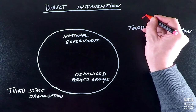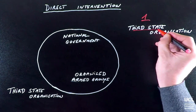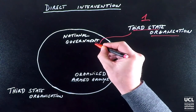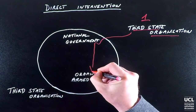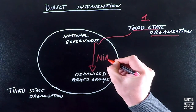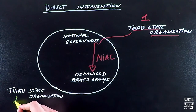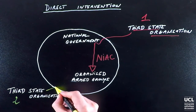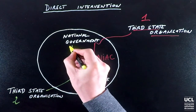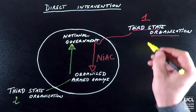Firstly, the third state or organization intervenes in support of the national government involved in a non-international armed conflict against an organized armed group. Secondly, the third state or organization intervenes in support of the armed group fighting the national government. Thirdly, both situations take place simultaneously.